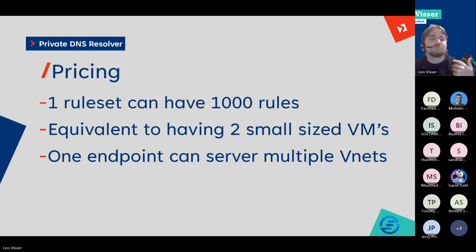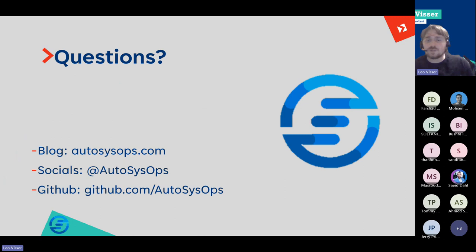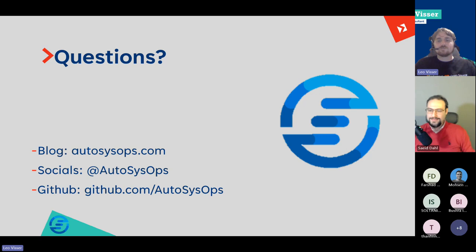There are some limitations. One rule set can only have up to 1,000 rules. So if you have very big complex environments, you might need more rule sets. But you don't need an endpoint for different virtual networks — one endpoint can serve multiple different virtual networks. The cost is about equivalent to small-sized virtual machines. I hope you enjoy this and learn something from it. If there are any questions, feel free to ask.